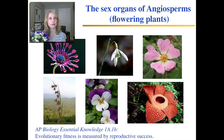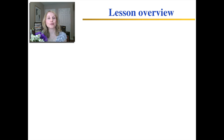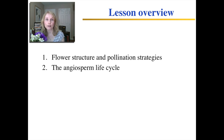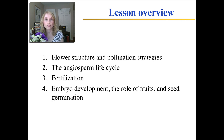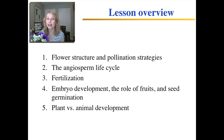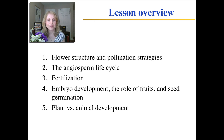I wonder if that's why men give women flowers. Let's go on. Here's your lesson overview. First, I will tell you about the structure of the typical flower and some of the different pollination strategies that plants have. Then the angiosperm life cycle, which is also called the alternation of generations. Then fertilization, and some interesting stuff about cell communication during the fertilization process. Then embryo development, the role of fruits, and a little about how seeds germinate. Then a brief overview of the differences between animal development and plant development. And finally, I'll briefly touch on asexual reproduction in plants.